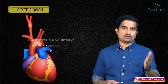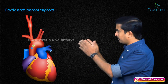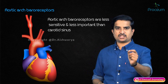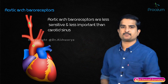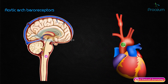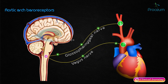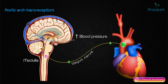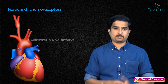At the aortic arch, there are also baroreceptors as well as chemoreceptors. The aortic arch baroreceptors are less sensitive and less important than the baroreceptors in the carotid sinus. They transmit afferent signals via the vagus nerve — in contrast to the carotid sinus, which uses the glossopharyngeal nerve. Importantly, they only respond to increased blood pressures, not to decreased blood pressures.